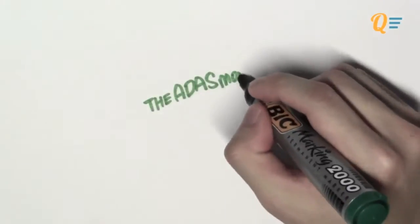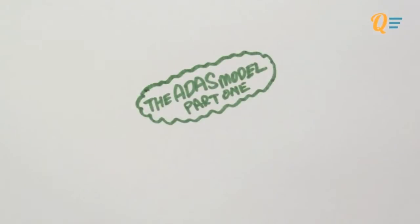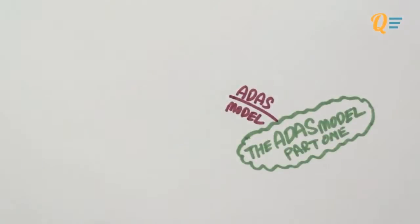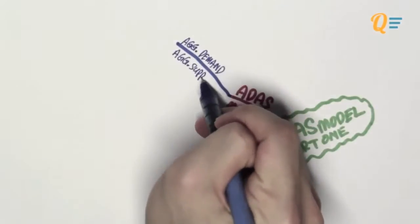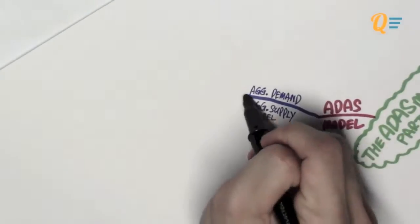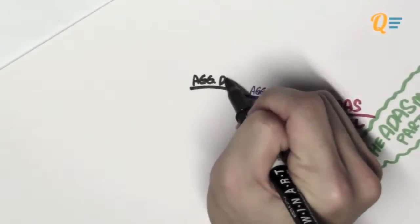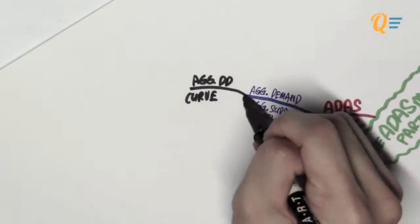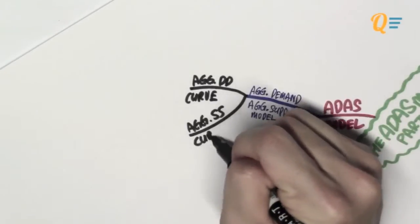We've reached a new chapter in macroeconomics. Today we'll be talking about the ADES model. ADES stands for the aggregate demand and aggregate supply model, and as you'd guess, the ADES model is made up of the aggregate demand curve as well as the aggregate supply curve.